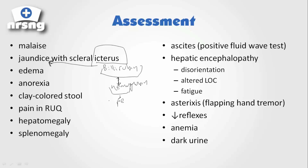Scleral icterus is going to be yellowing of the eyes — anytime you hear the term icterus, think jaundice. We're also going to get edema. The reason for that is that the liver helps to regulate proteins and protein metabolism. Proteins play a very important role in volume regulation. They help draw fluids in, so when we have a decrease in these proteins, fluid is going to be able to leak out, and that's going to cause edema.